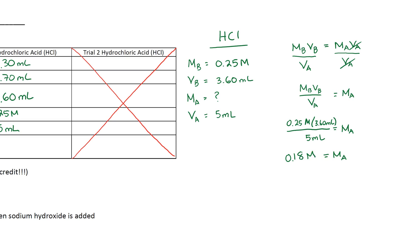Once I multiply 0.25 and 3.6 and divide by 5, I get this value in my calculator, keeping my sig figs only one sig fig. So I'm rounding it to 0.2 molar and that's the concentration of my hydrochloric acid. So I'm writing down 0.2 molar.